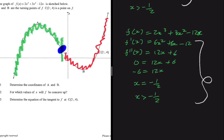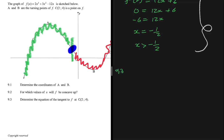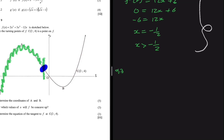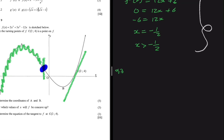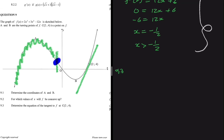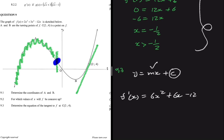The last question is 9.3: find the equation of the tangent to f at point C. The tangent is a straight line so we need y = mx + c. To find the equation we need the gradient, and then substitute one point to find the constant c. We know f′(x) is the gradient equation and equals 6x² + 6x − 12. We substitute x = 2 because that is the x-coordinate of C.